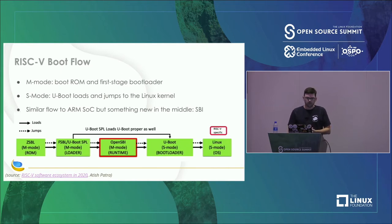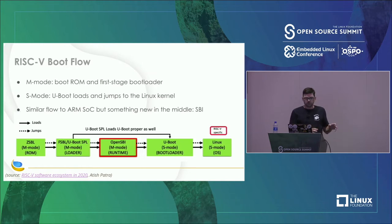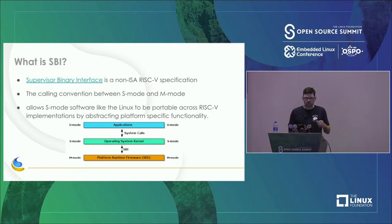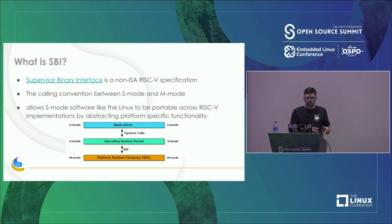The boot flow for RISC-V is similar to ARM. We start in M mode with the boot ROM and first-stage bootloader, then at the end we're in S mode where U-Boot loads and jumps to Linux. But in between there's something new called SBI — Supervisor Binary Interface. It's a non-ISA RISC-V specification and the calling convention between S mode and M mode, abstracting platform-specific functionality to make S mode software like the Linux kernel portable across implementations.